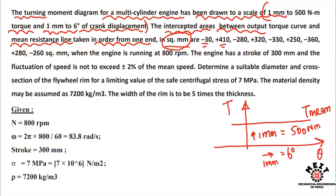When the engine is running at 800 RPM, n is equal to 800 RPM.